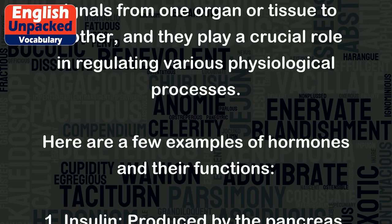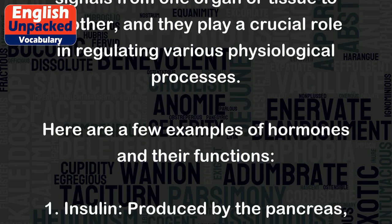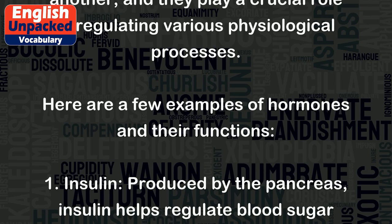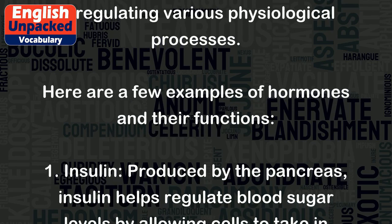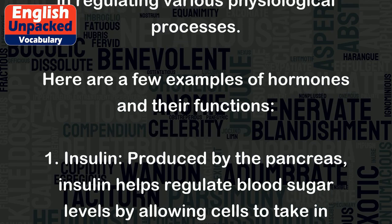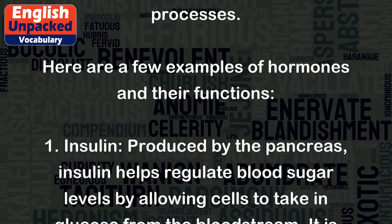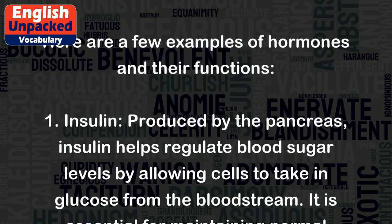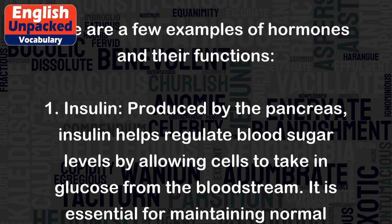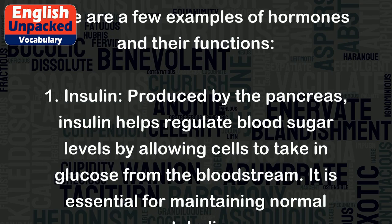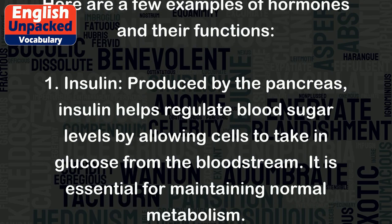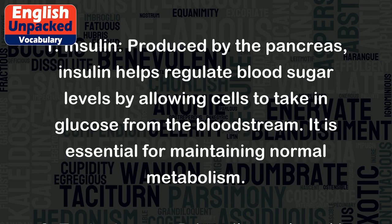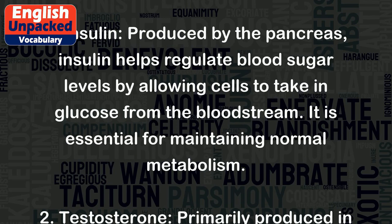1. Insulin. Produced by the pancreas, insulin helps regulate blood sugar levels by allowing cells to take in glucose from the bloodstream. It is essential for maintaining normal metabolism.